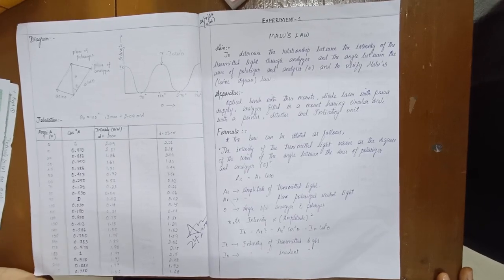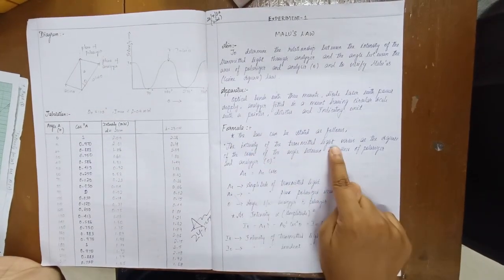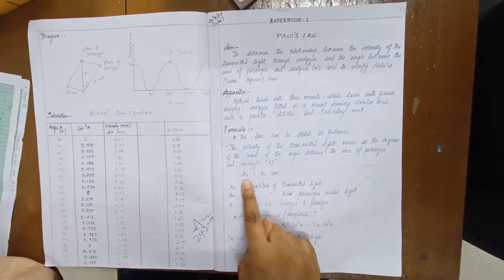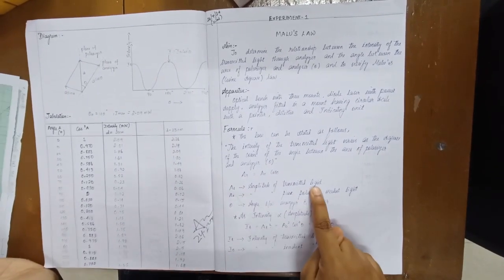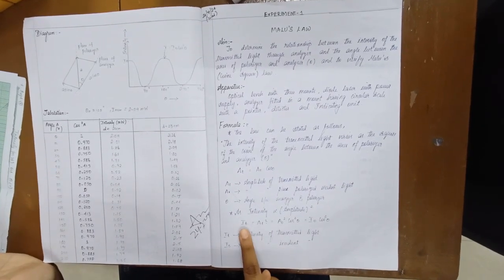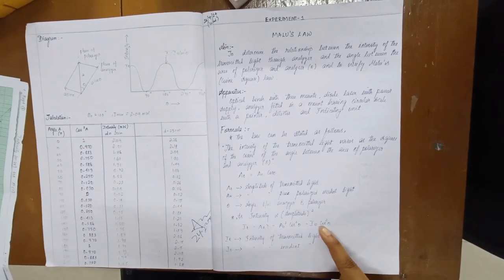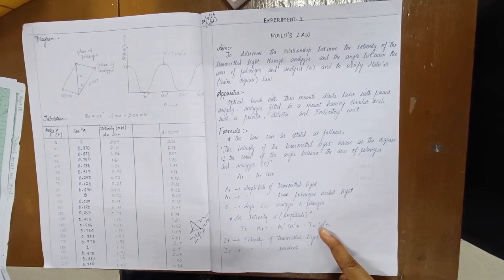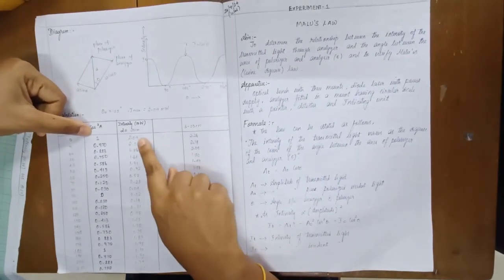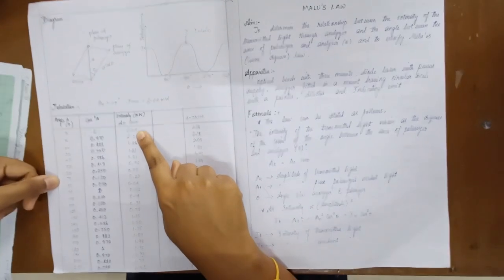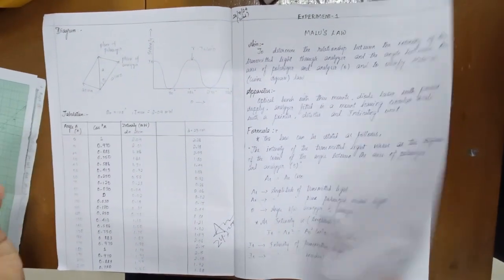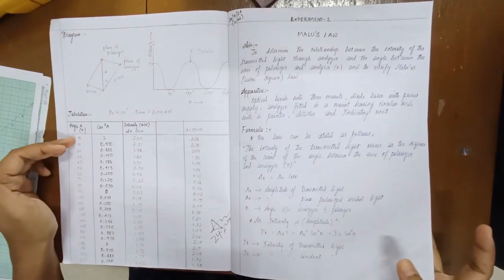For the calculation and graph, Malus's Law states I = I₀ cos² θ, where Aₜ is the amplitude of transmitted light and A₀ is the amplitude of plane polarized light. When theta is zero degrees, cos² θ equals 1 and we get maximum intensity — for example, 2.09 milliwatts. As we increase the angle, intensity decreases, reaching minimum at 90 degrees. Increasing further to 360 degrees brings it back to the value at zero degrees.